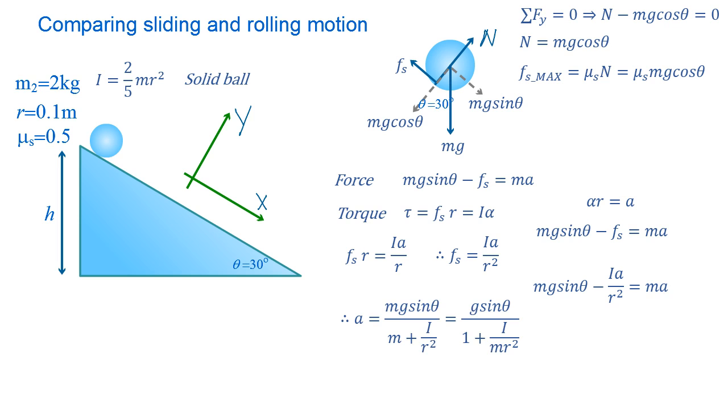Therefore, by doing that, we can find this acceleration equal to mg sine theta divided by m plus I divided by r squared.